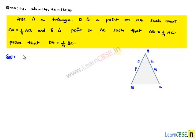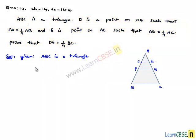So let us note down the given information. ABC is a triangle as shown in figure. D is a point on AB such that AD is equal to one-fourth AB. So let us consider a point D on AB such that AD is equal to one-fourth of AB.